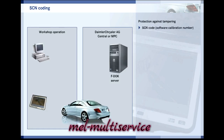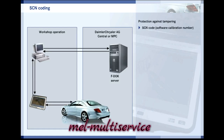SCN stands for Software Calibration Number. You must request the SCN code from the manufacturer, stating the modification you've made and the vehicle identification number. The manufacturer calculates the code and sends it to the workshop, where it is stored in the vehicle control unit using the diagnostic system. Only then does the modification come into effect. The manufacturer must be notified so that all modifications can be centrally recorded.